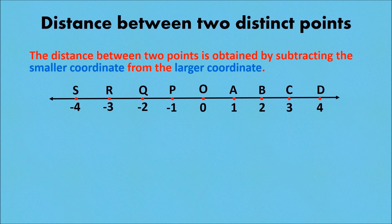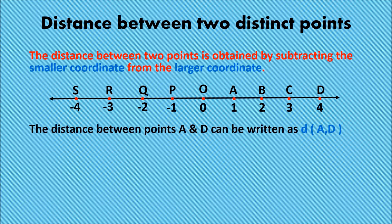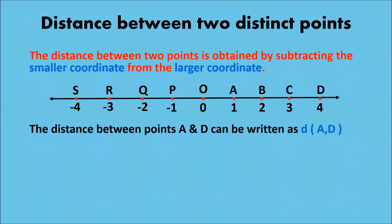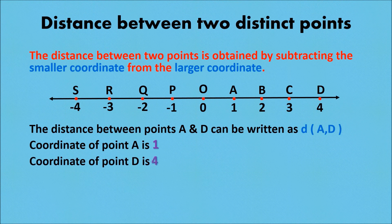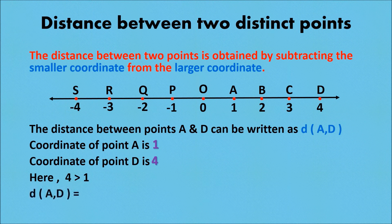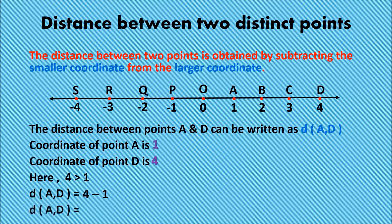Now we will understand this with the help of an example. Here we have a number line. The distance between point A and D can be written as d(A, D), where small d represents distance and A and D are the two points. The coordinate of A is 1 and the coordinate of D is 4. Since 4 is greater than 1, the distance AD equals greater coordinate minus smaller coordinate, that is 4 minus 1. Therefore, distance AD equals 3.